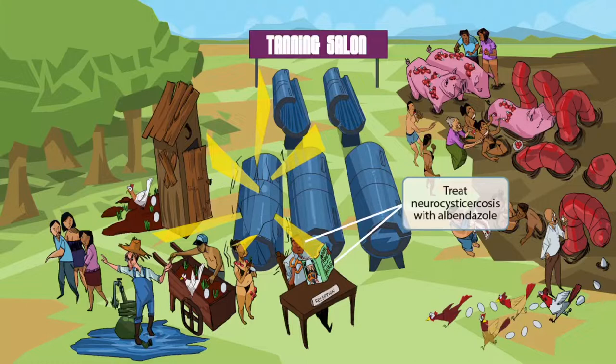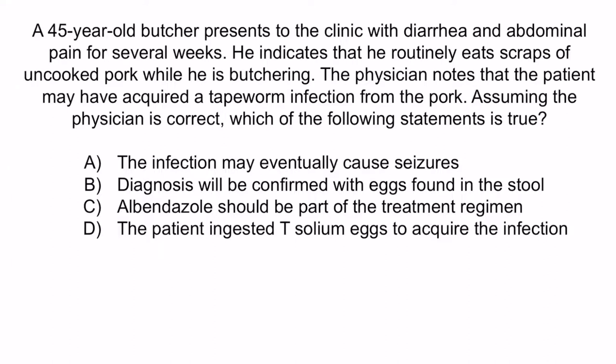Now let's do a question to apply what you've learned. A 45-year-old butcher presents to the clinic with diarrhea and abdominal pain for several weeks. He indicates that he routinely eats scraps of uncooked pork while he is butchering. The physician notes that the patient may have acquired a tapeworm infection from the pork. Assuming the physician is correct, which of the following statements is true? A: The infection may eventually cause seizures. B: Diagnosis will be confirmed with eggs found in the stool. C: Albendazole should be part of the treatment regimen. Or D: The patient ingested Taenia solium eggs to acquire the infection.